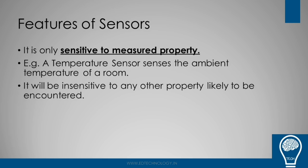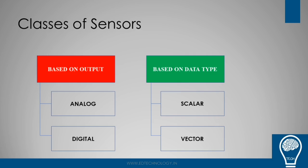The classes of sensors are very important to know, as you will be using different types in this course and in the IoT world. Based on output, there are two types: analog and digital. Analog sensors provide output values in a continuous form — for example, a temperature sensor giving continuous values. Digital sensors output either one/zero, on/off values.